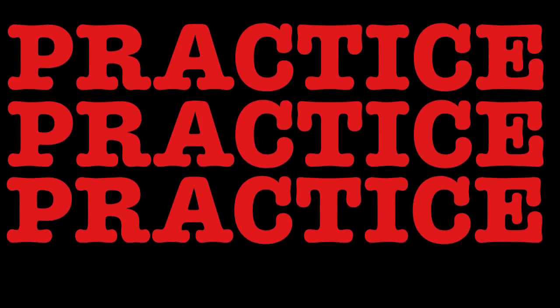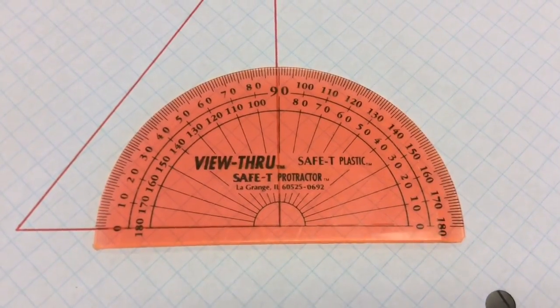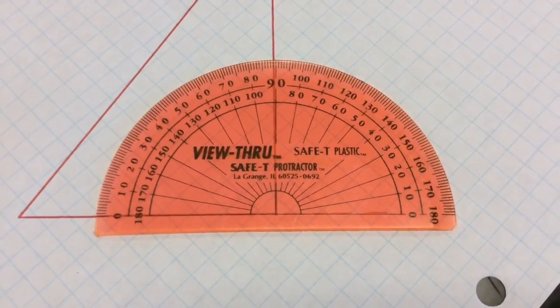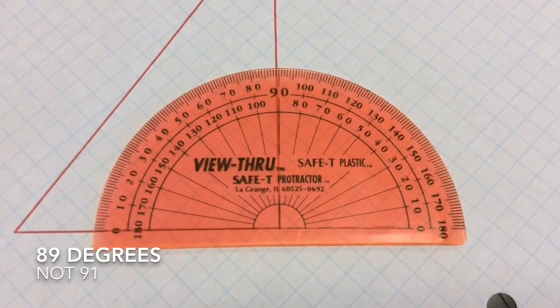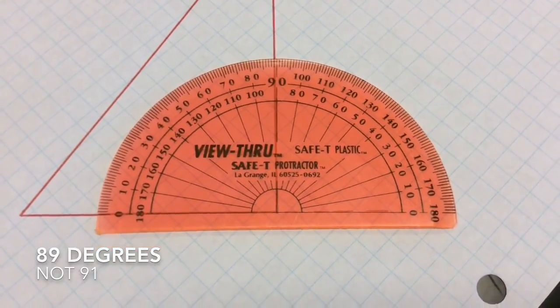Now it's time for you to practice because practice makes perfect, right? But get your finger ready because you need to stop the video when I tell you to. Okay, stop now. Take a look at it. What's the angle? The interior angle of that triangle is 89 degrees, not 91.